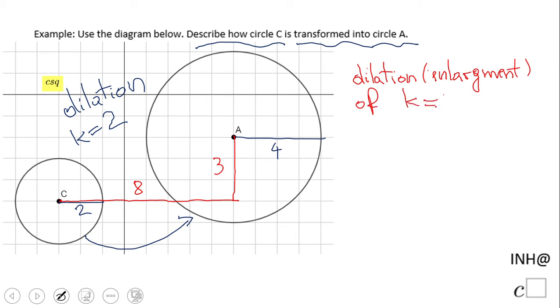K equals the factor of 2, that is one transformation, and we have a translation.